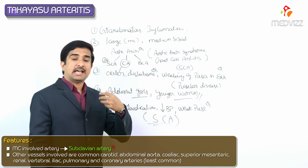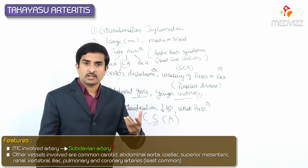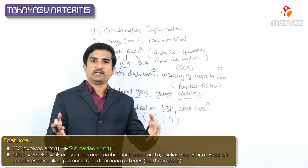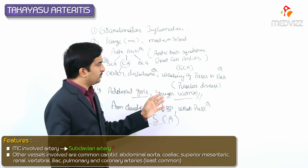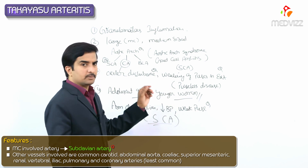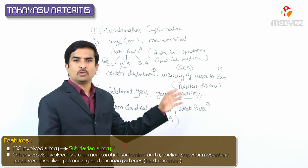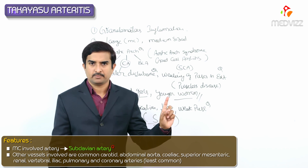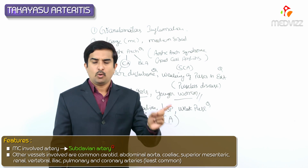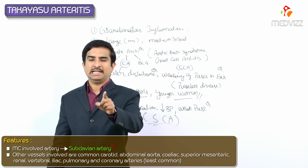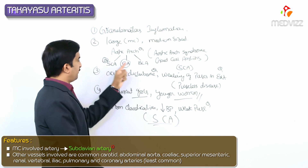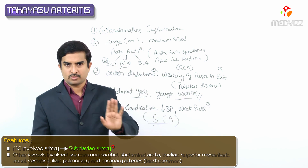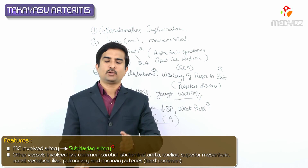Other vessels which may be involved include the common carotid artery, arch of aorta, sometimes abdominal aorta, celiac trunk, superior mesenteric artery, renal, vertebral, iliac, pulmonary, and coronary arteries — but these are least common. More commonly seen is involvement of the arch of aorta and its branches.